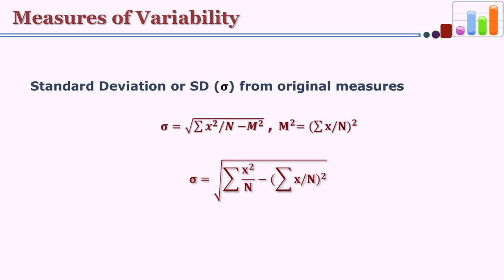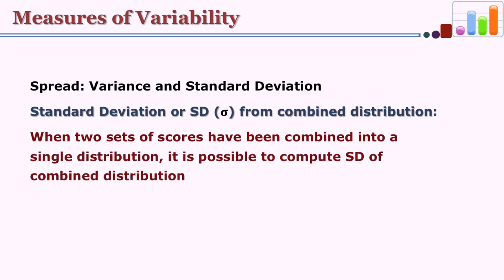When we want to compute SD from the original scores, we can use the formula: sigma equals the square root of (summation x² upon n) minus m². And m² equals (sigma x upon n) whole square. Substituting, sigma equals square root of [(summation x² upon n) minus (summation x upon n)²]. This is about computing standard deviation of a given distribution.